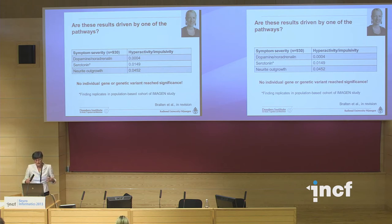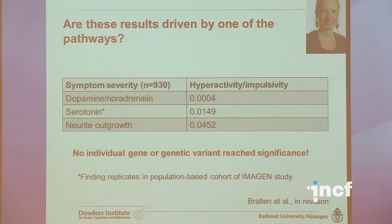When she disassembled the different pathways, she found that all of them contributed individually to the association. By integrating the genes within the pathways, we gain more power for genetic association analysis. This study required only 900 individuals, whereas genome-wide association studies need tens of thousands.